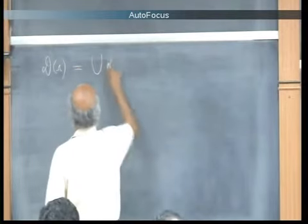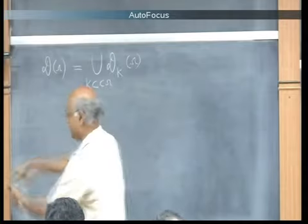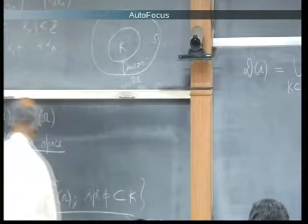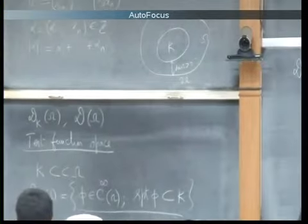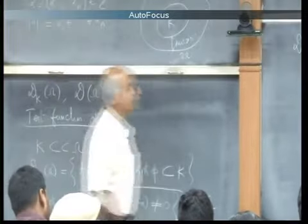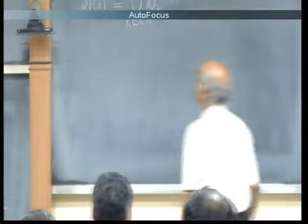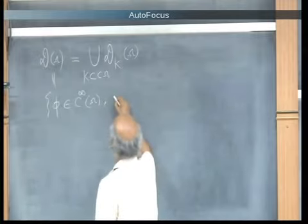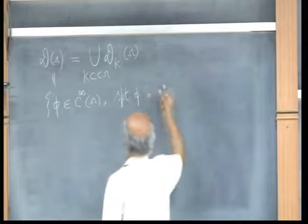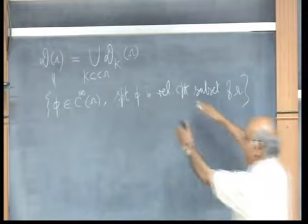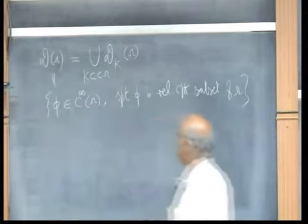D(omega) is the union of all D_K(omega) over all relatively compact sets K. A function in D(omega) can be nonzero on some compact set and zero outside it. D(omega) consists of all smooth functions on omega such that the support of phi is some relatively compact subset of omega. In D_K(omega) we have control on the support, whereas in D(omega) we do not fix a particular K.